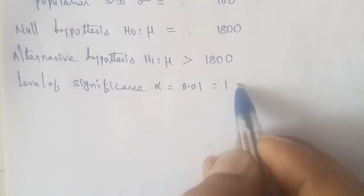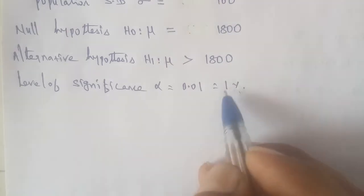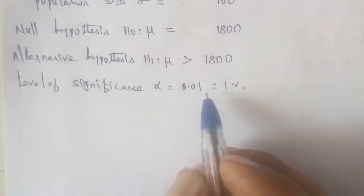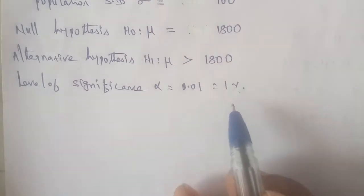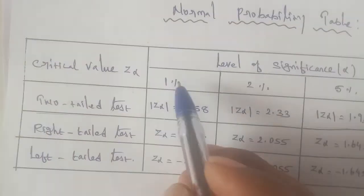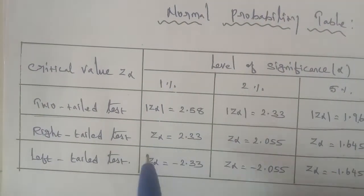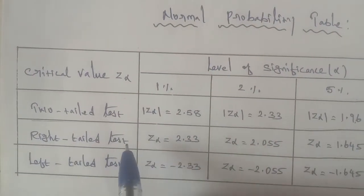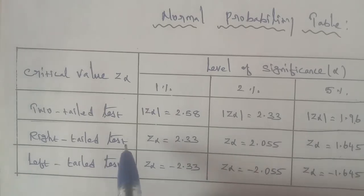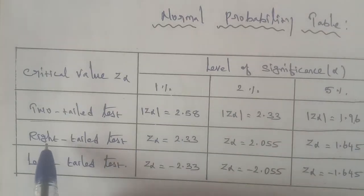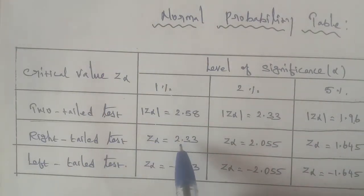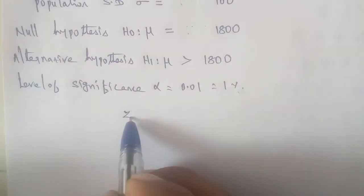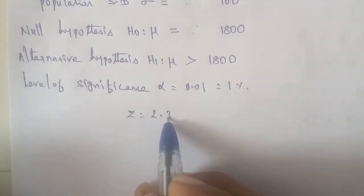Level of significance 0.01 means 1%, which is 1/100 = 0.01. For the normal distribution test at 1% significance, this is a right-tail test. The critical value for a right-tail test at 1% is 2.33.